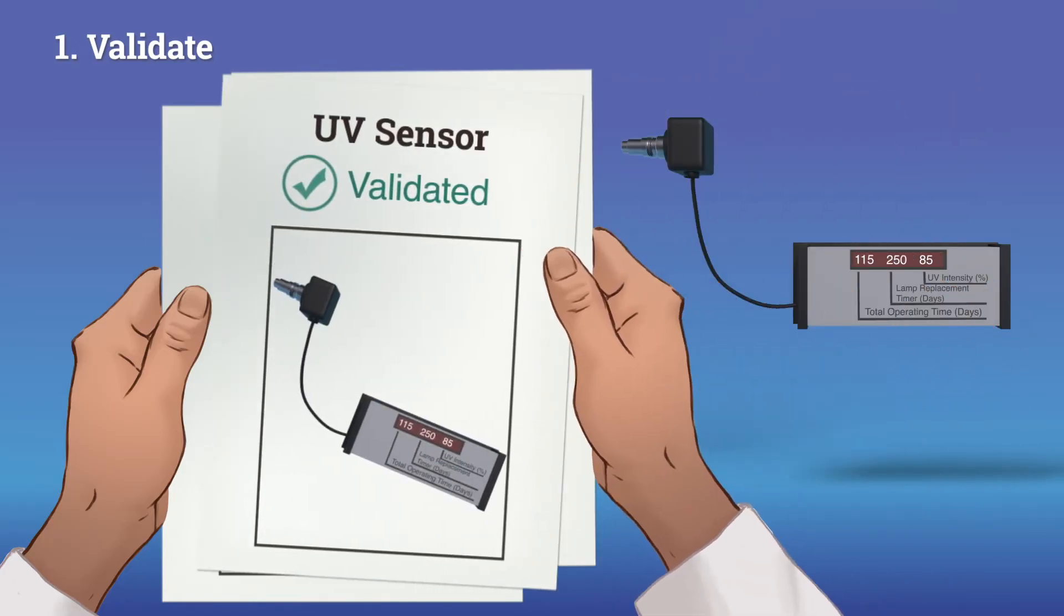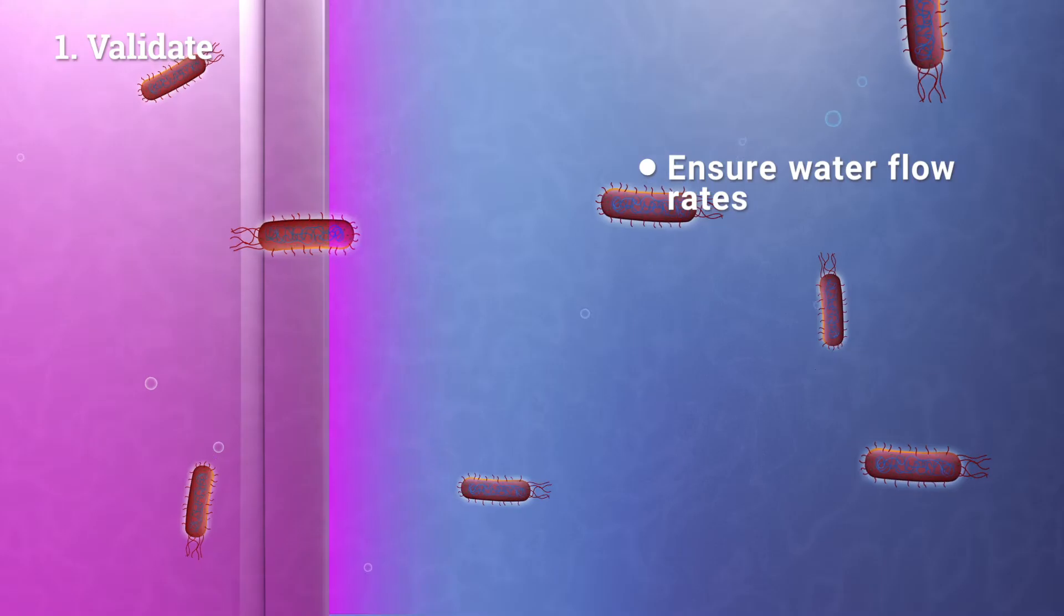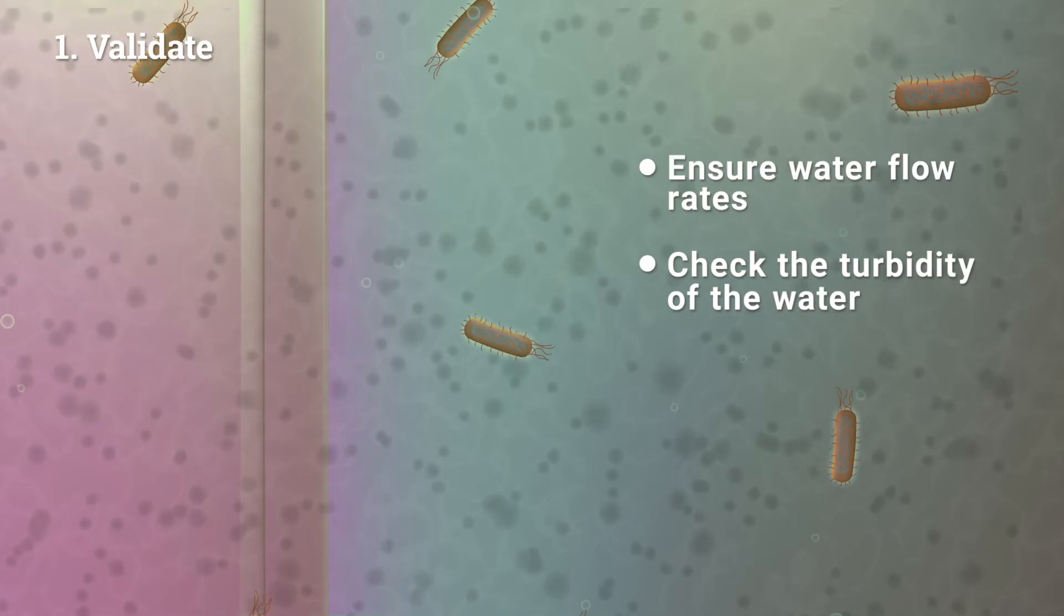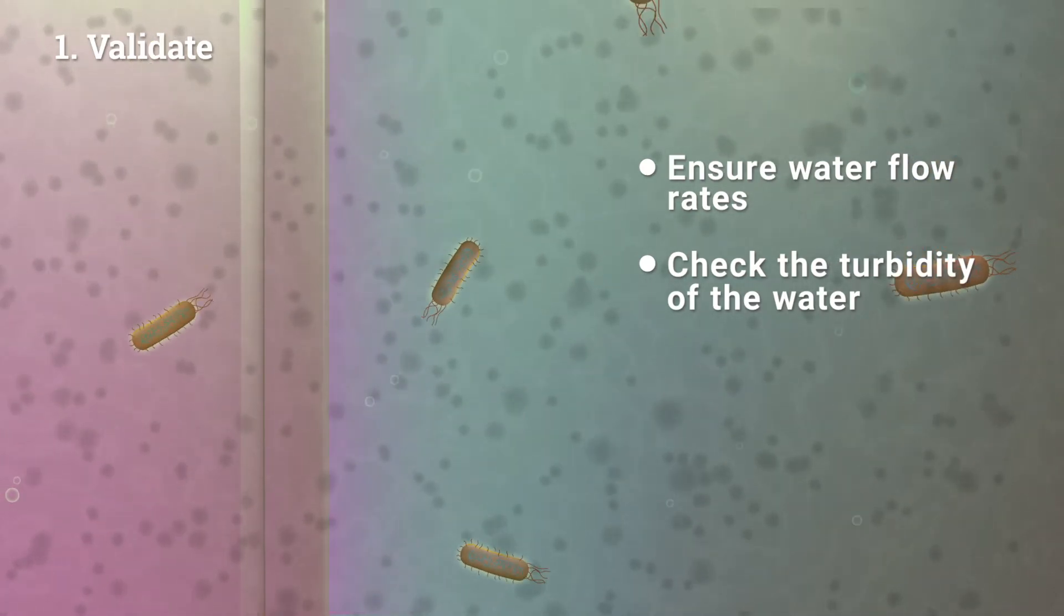You validate the system when it is initially installed. Be sure to check water flow rates so that water is not moving too fast and also check the cloudiness or turbidity of the water to make sure the UV light will be effective.